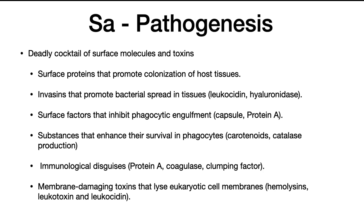S. aureus produces substances that enhance their survival in phagocytes. Carotenoids and catalase will short-circuit mechanisms in phagocytes to kill them. Protein A, coagulase, and clumping factor provide immunological disguises that hide the bacterium from the immune system. Finally, membrane-damaging toxins such as hemolysins, leukotoxin, and leukocidin lyse eukaryotic cell membranes. These are toxic to white blood cells, which make up much of the immune system, and will stop phagocytes from killing the bacterium.